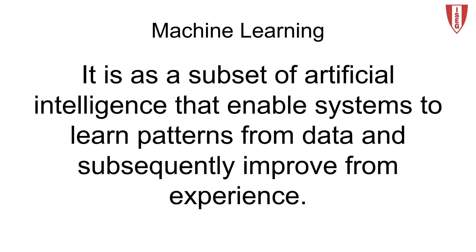Machine learning is a type of artificial intelligence that enables systems to learn patterns from data and subsequently improve from experience. As it gathers and organizes more information, machine learning constantly gets better at identifying types and forms of data with little or no hard-coded rules. It is also the scientific study of algorithms that computer systems use to perform specific tasks without explicit instructions, including making predictions through pattern recognition.